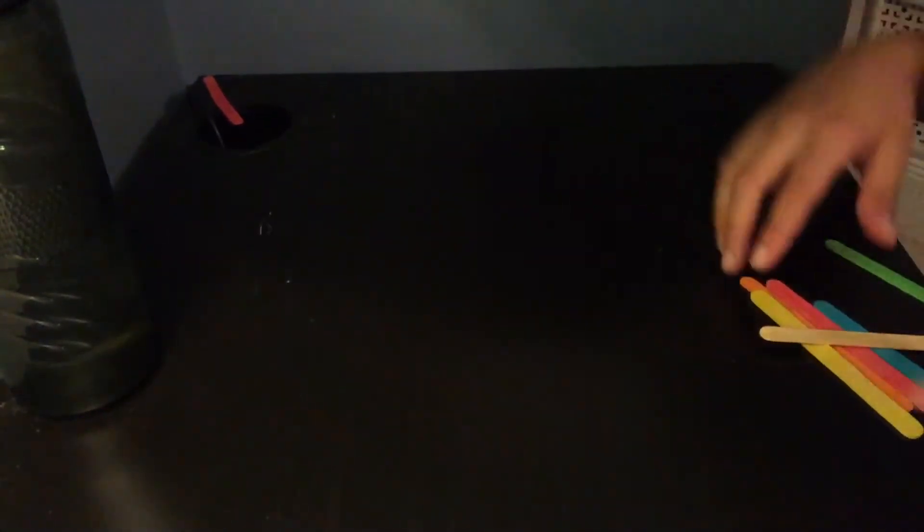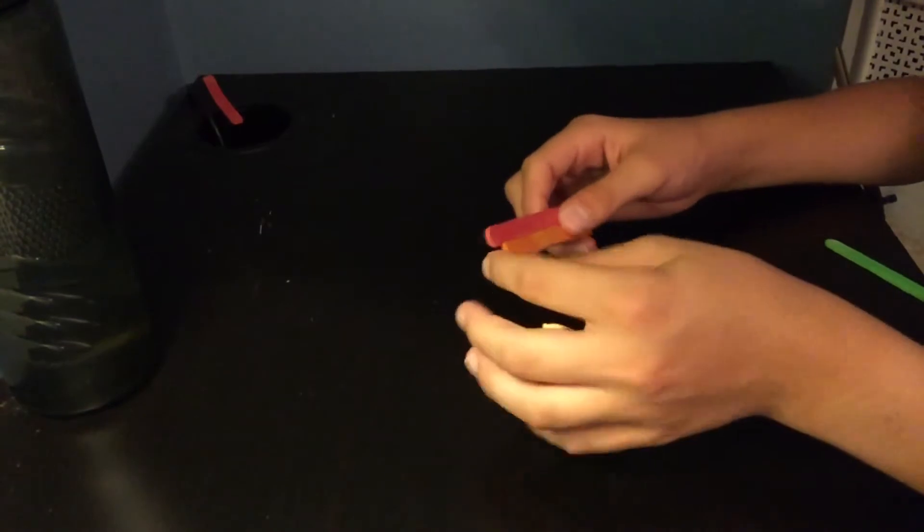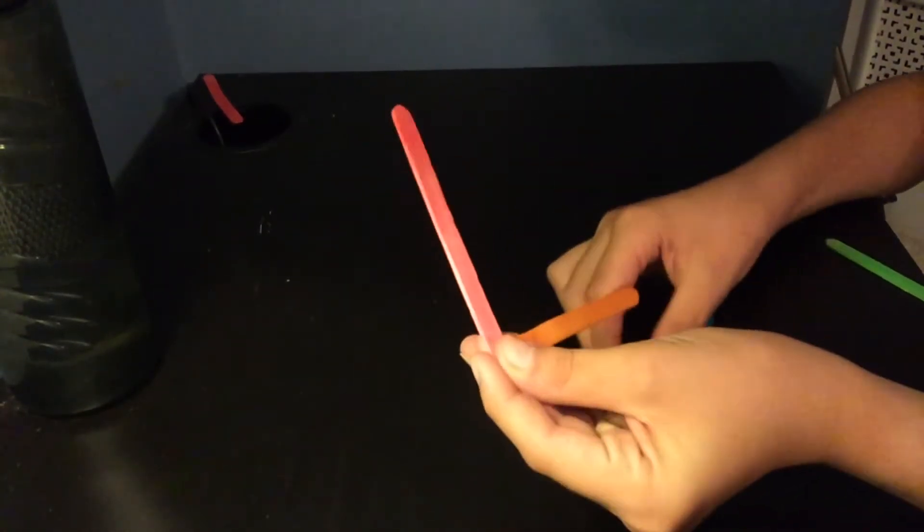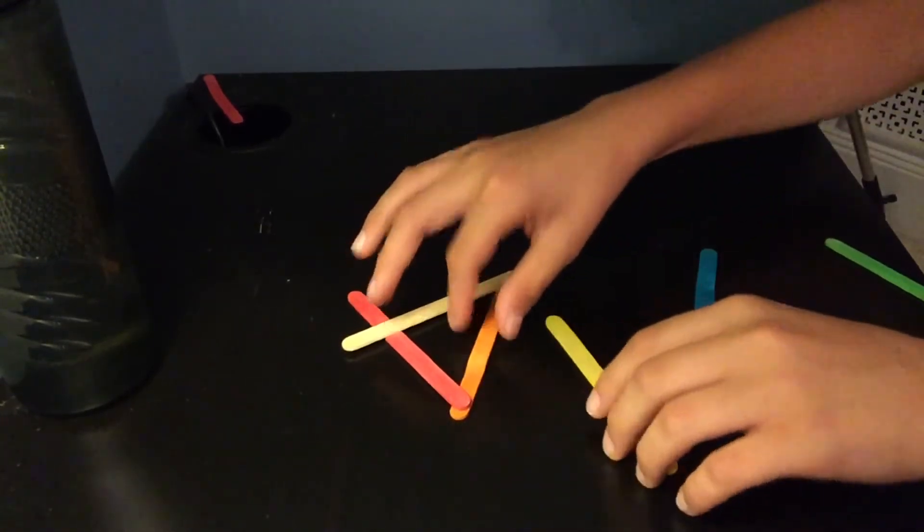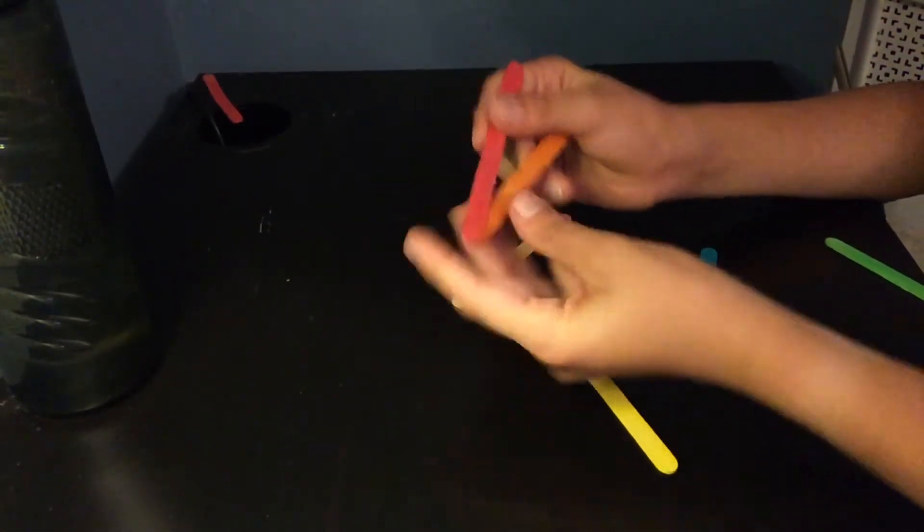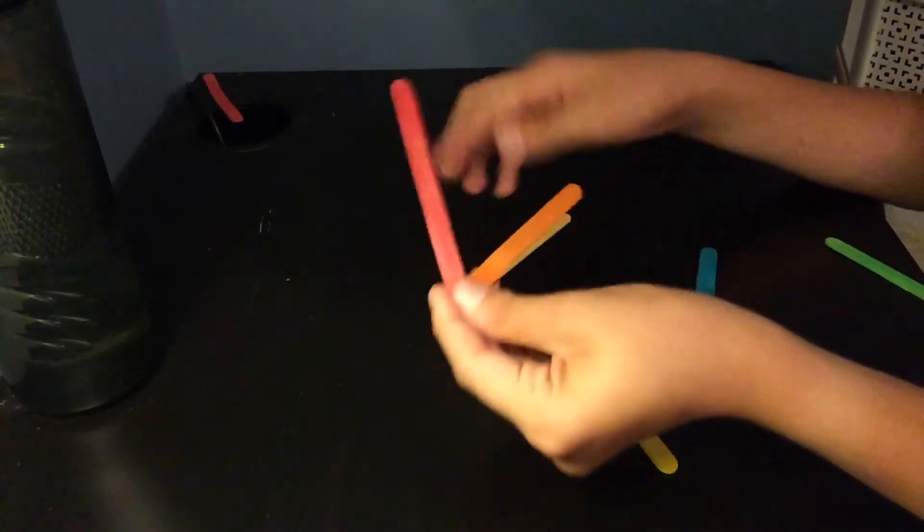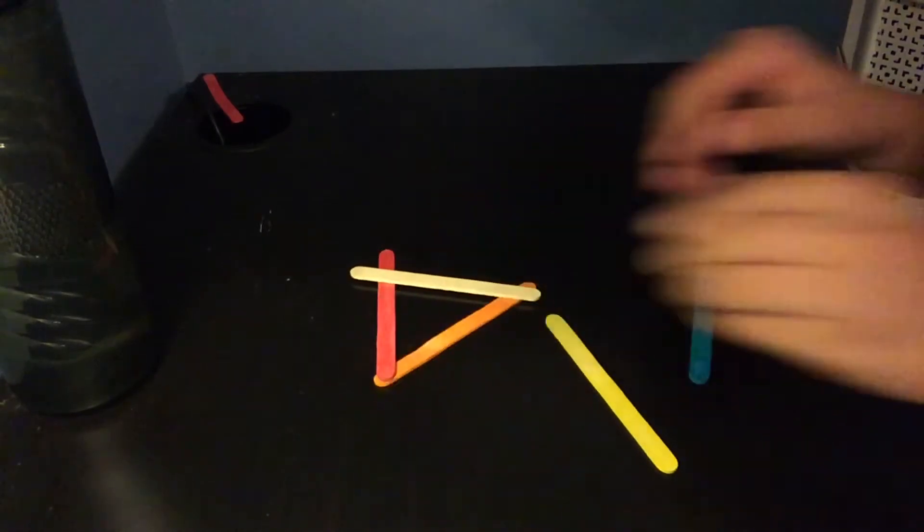Okay, so the next one is a popsicle stick design, a throwing star design that only uses four. It's more complicated than that one and it's harder to do. So the first thing you do is take two popsicle sticks, this one over that one. Then you take a third one going over both of them like that.